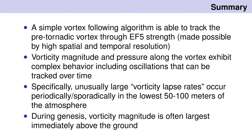I've done the vortex-relative analysis using a very simple vortex tracking algorithm — all I do is seed a vortex location and follow that location over time. This is made possible by the high spatial and temporal resolution. The vortex magnitude and pressure along the vortex exhibit complex behavior, including oscillations that can be tracked over time, along with very strong gradients of vorticity at the surface. These occur sporadically in the lowest 50 to 100 meters of the atmosphere, and often you have the strongest vorticity of the tornado occurring at the first grid point above the ground.